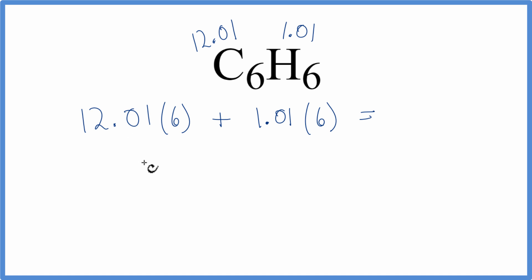So we do our multiplication. We get 72.06 grams per mole plus 6.06 grams per mole. We'll add these up to get the molar mass of C6H6, which is 78.12 grams per mole.